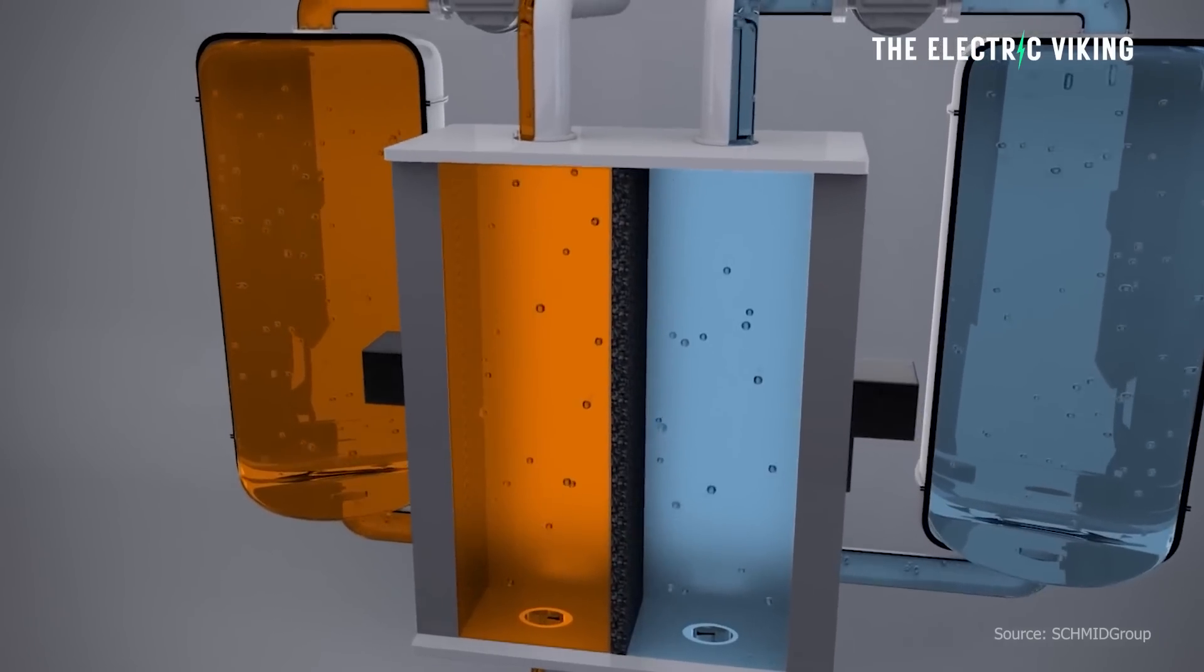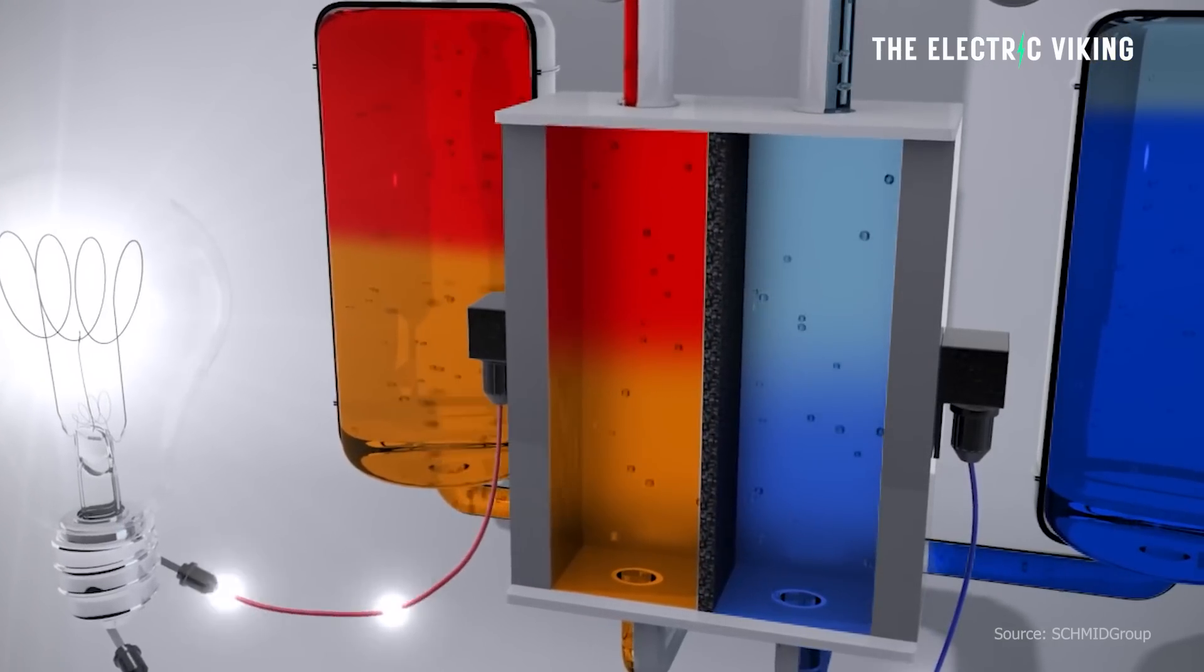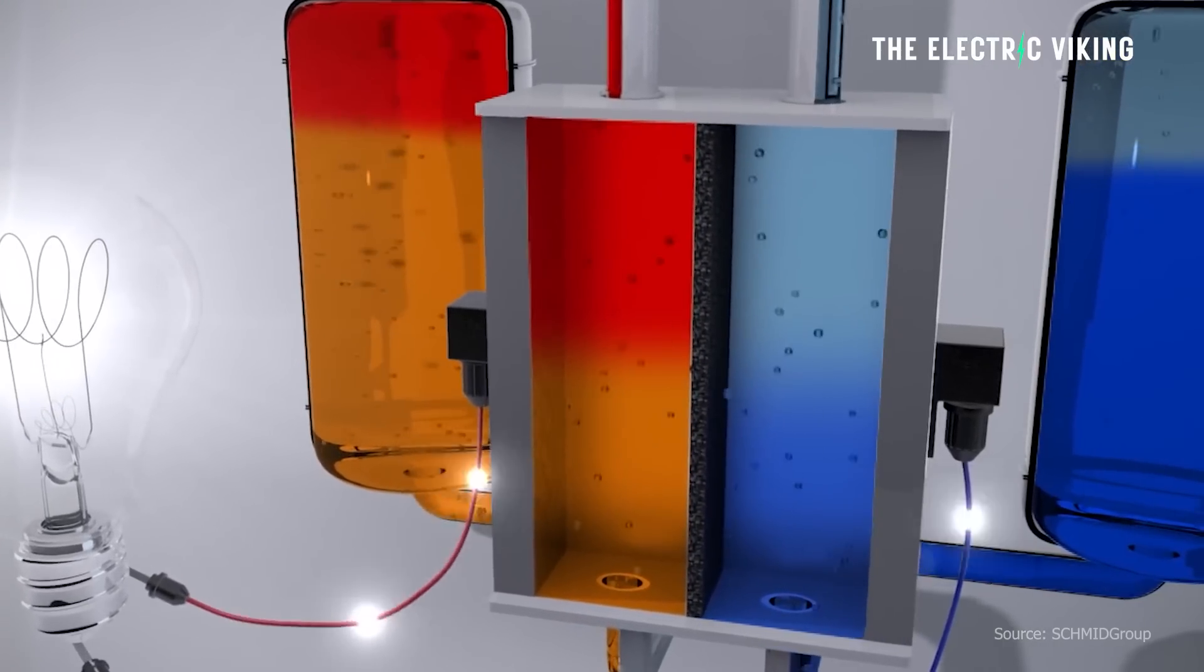There are some big advantages to flow batteries. The flow battery maintained its capacity to store and release energy for more than a year of continuous charge and discharge, according to an experiment conducted by a research team from the Department of Energy's Pacific Northwest National Laboratory.